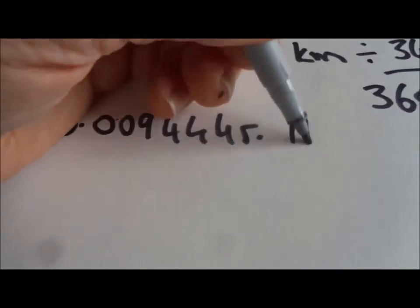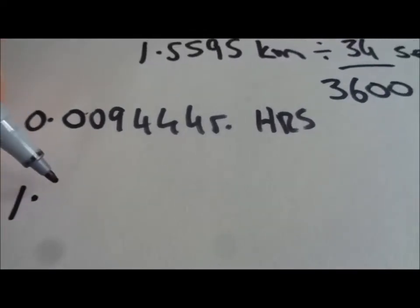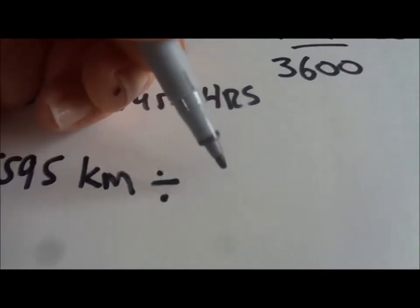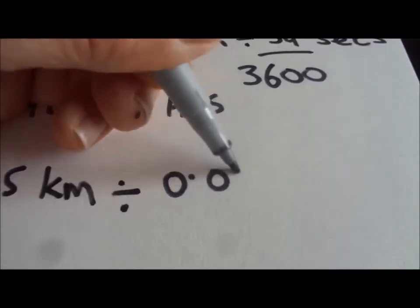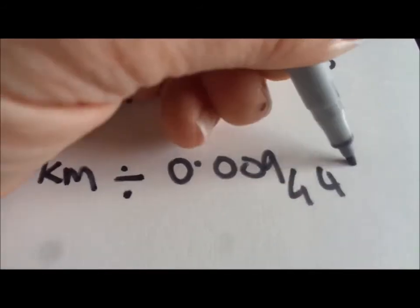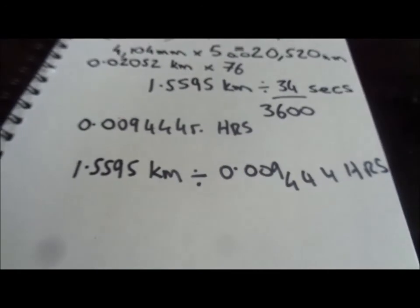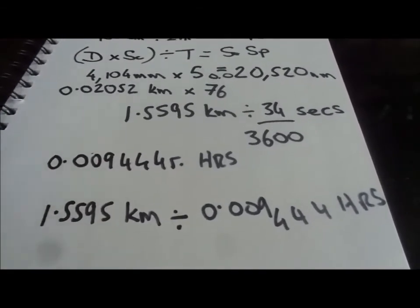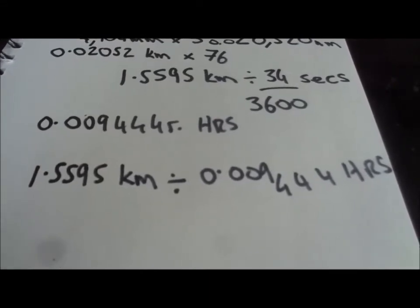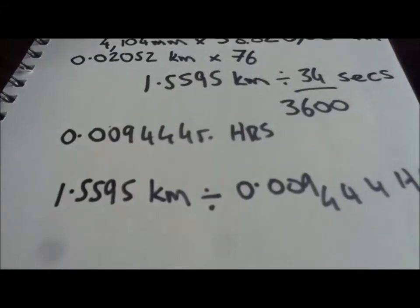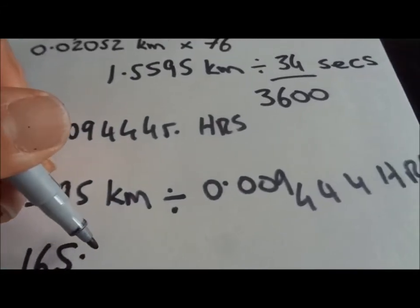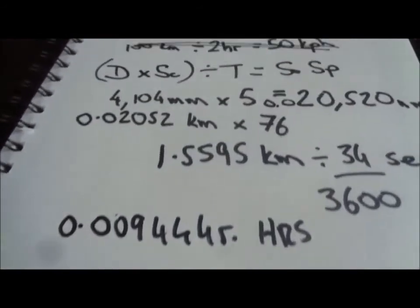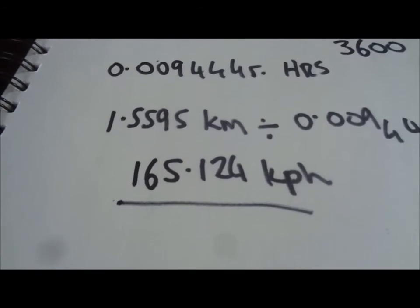Are you with me so far? That's how many hours. So now we have 1.5595 kilometres, and we're dividing it by 0.00944 hours. Does that all make sense? Can you do that quickly in your head, Arch? I think it's 165.124. Close enough, Arch. Yeah, it is 165.124 scale kilometres per hour. Absolutely excellent. You see, it's not that difficult. I think we can do that at home if you've got a mathematical genius next to you like Archie. I actually just used a calculator.